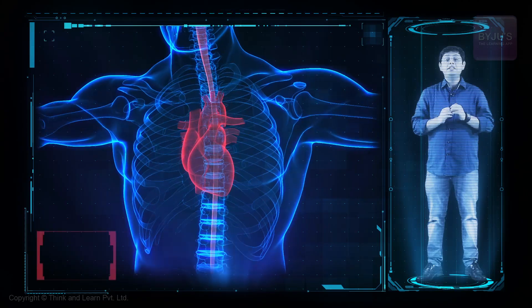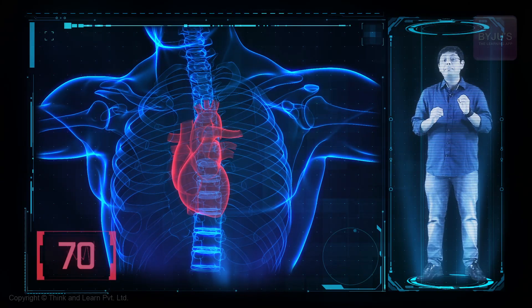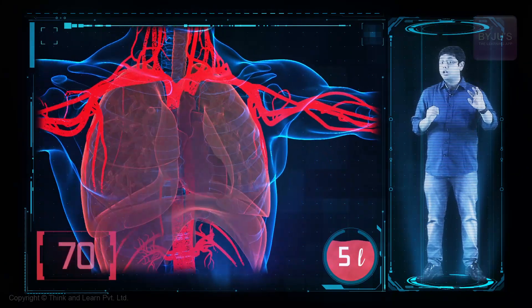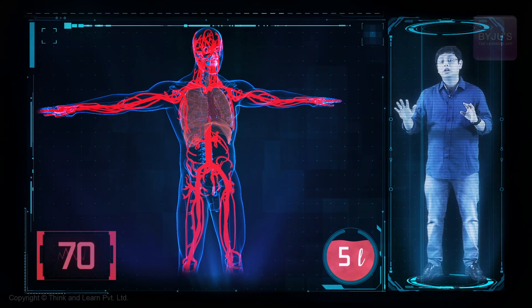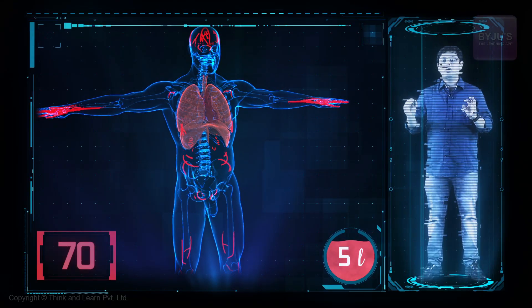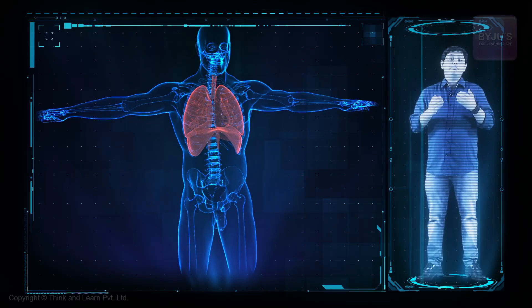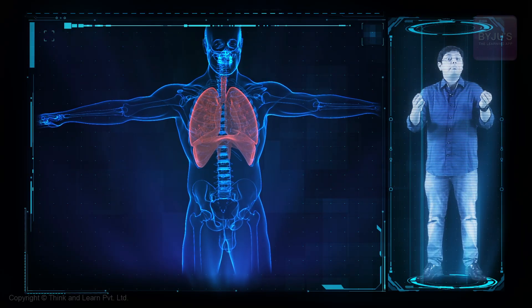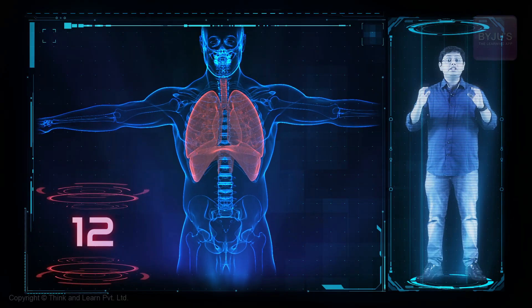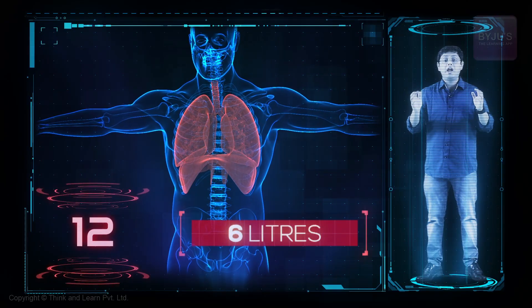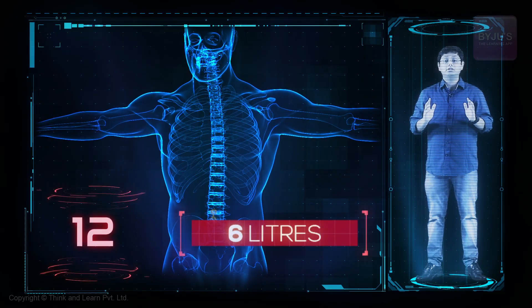Your heart will beat 70 times, pumping 5 liters of blood to your lungs and another 5 liters to the rest of your body. In the same time, you will breathe in and out about 12 times, exchanging 6 liters of air between the atmosphere and the lungs.